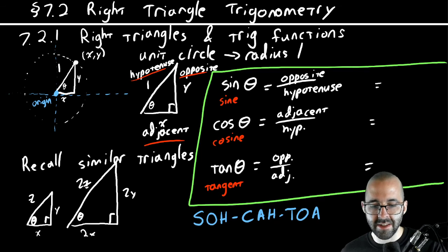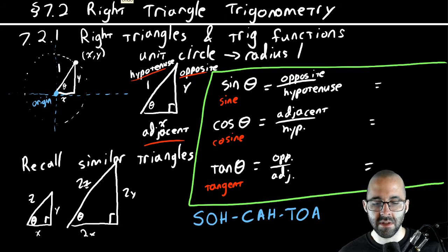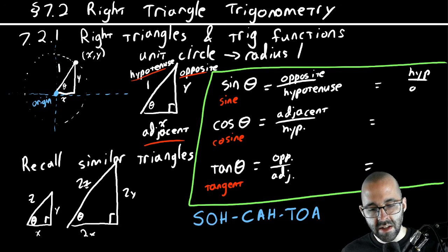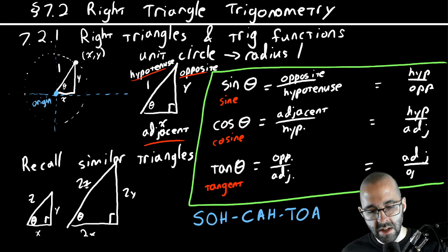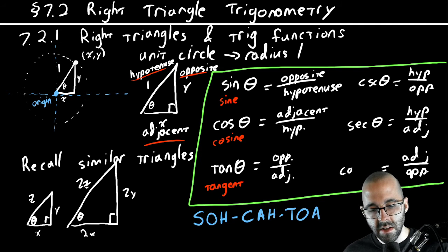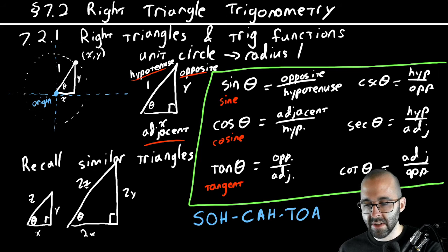There are three more trig functions — the reciprocal trig functions. What happens if we flip these ratios upside down? Hypotenuse divided by the opposite, hypotenuse divided by the adjacent, and the adjacent divided by the opposite. These are called the reciprocal functions, and here they are: cosecant theta, secant theta, and cotangent theta. These are three of our six trigonometric functions.